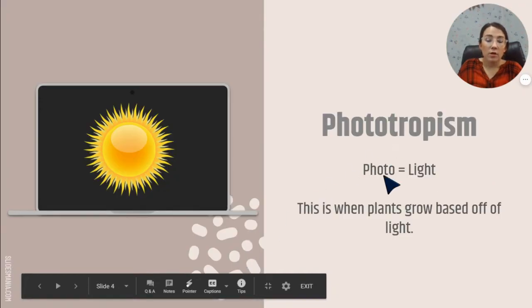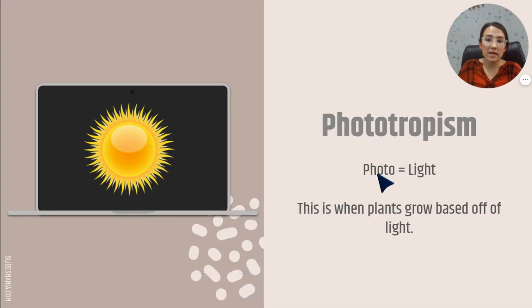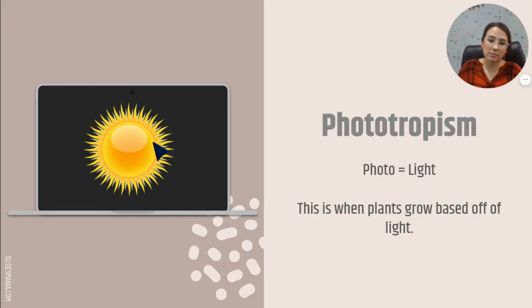Phototropism — I want you to break down the word. Photo means light. Most plants get their light from the sun, but this includes all light.